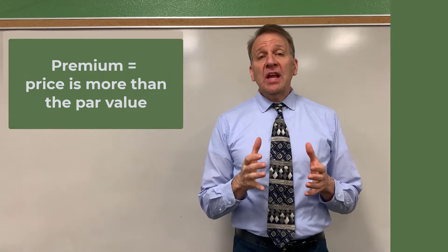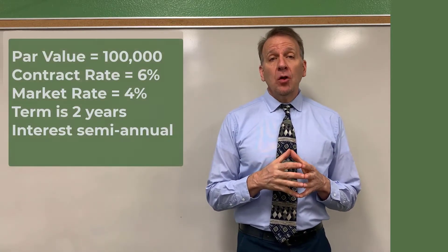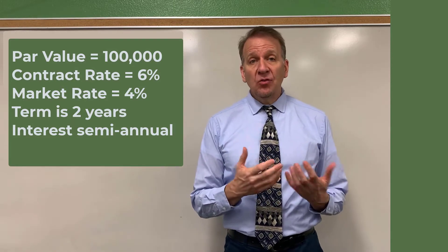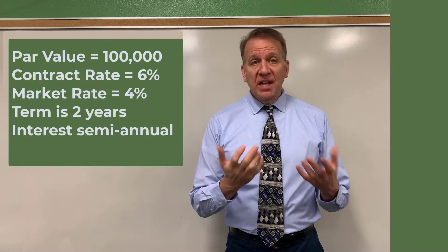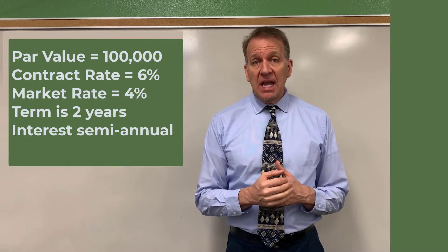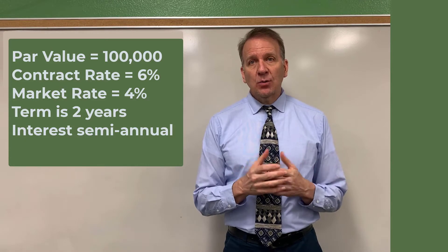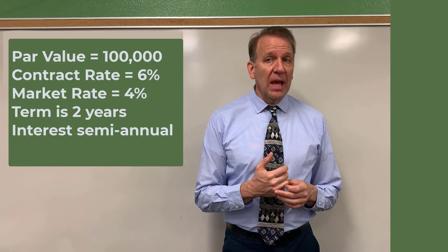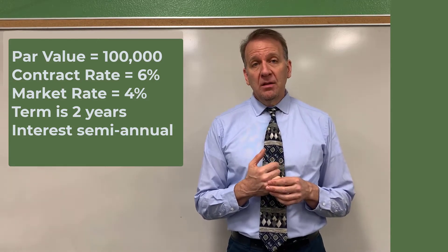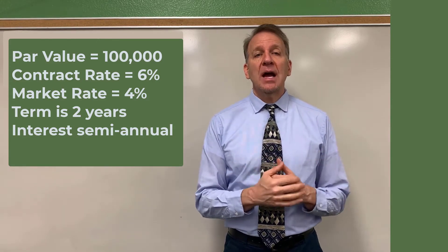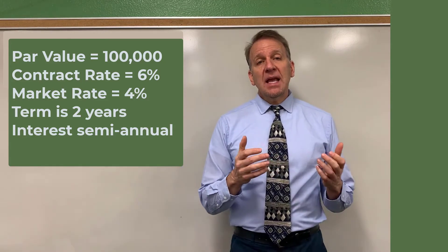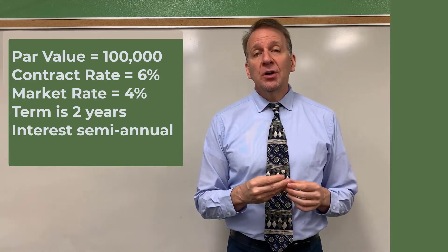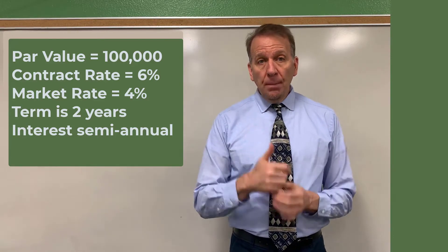In this example we have a hundred thousand dollars worth of bonds that we're going to be selling, and the par value will be a thousand dollars. The contract rate, or stated or coupon rate, will stay the same as in our previous video — that contract rate will be six percent. The market rate in this example is going to be four percent, which is less than our contract rate. Currently in the marketplace, similar bonds would earn four percent, but we're paying six percent.